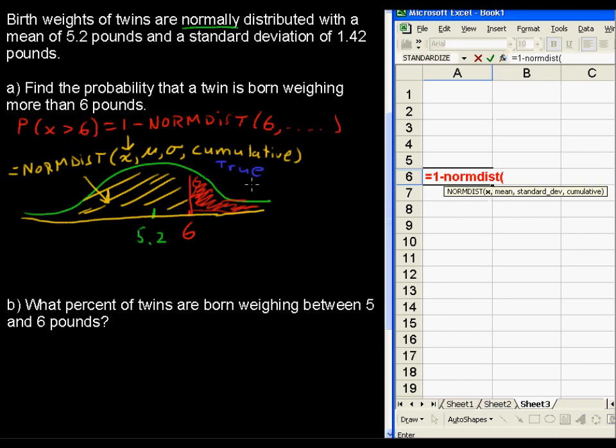Equals 1 minus the normdist, because we're looking for the area to the right of a value, and then Excel walks you through it. What is it looking for? It's looking for the x value, that's 6, the mean is 5.2, the standard deviation is 1.42 in this example, and cumulative, we say true.